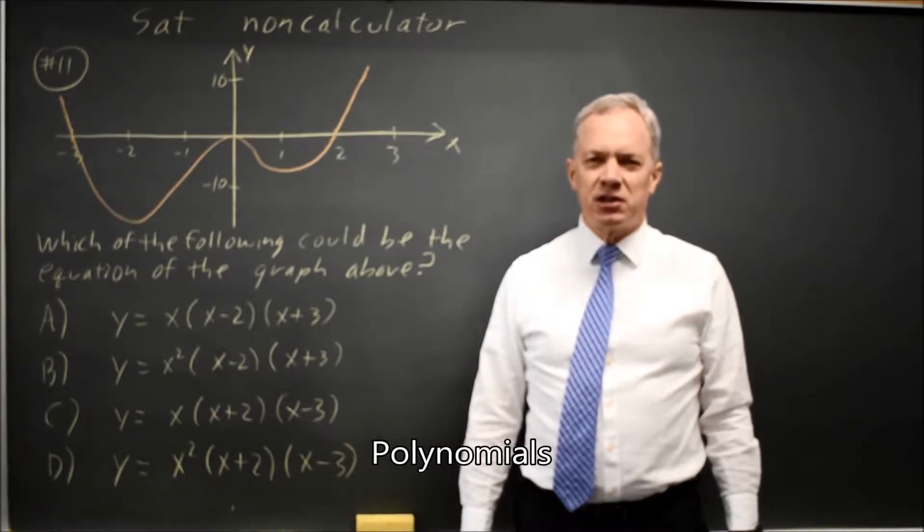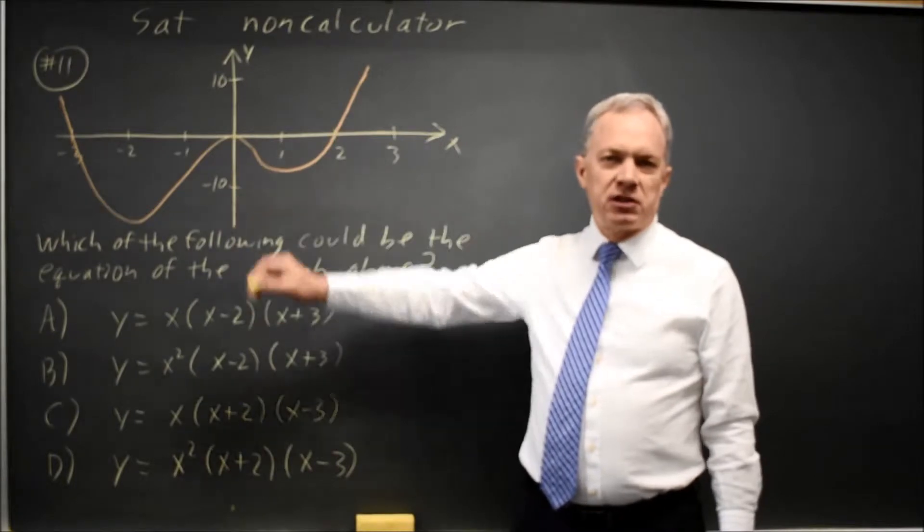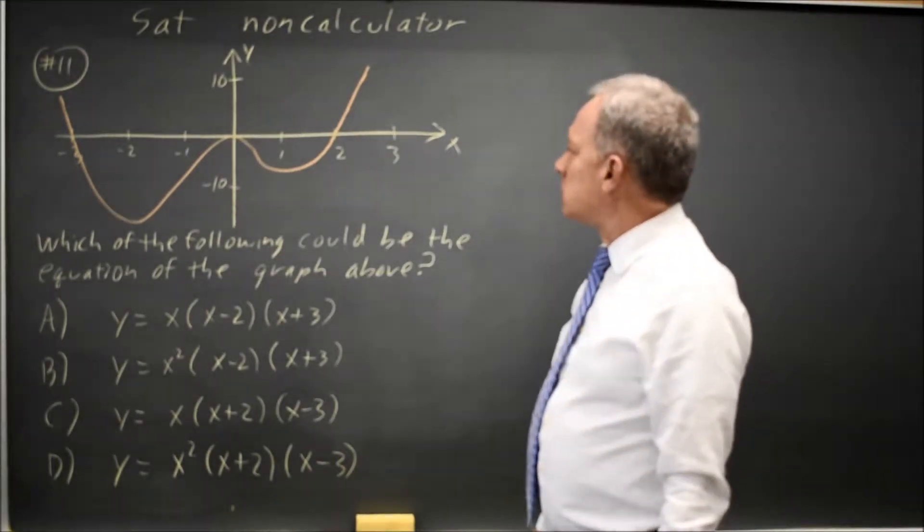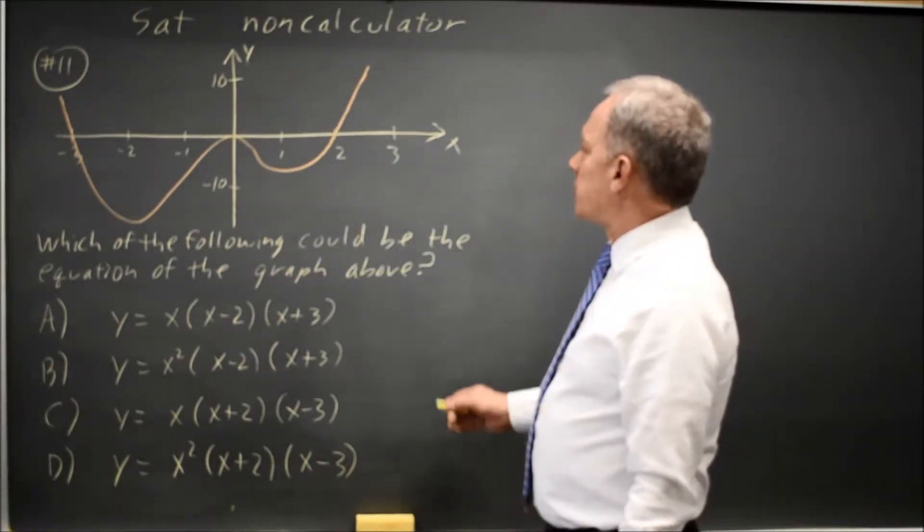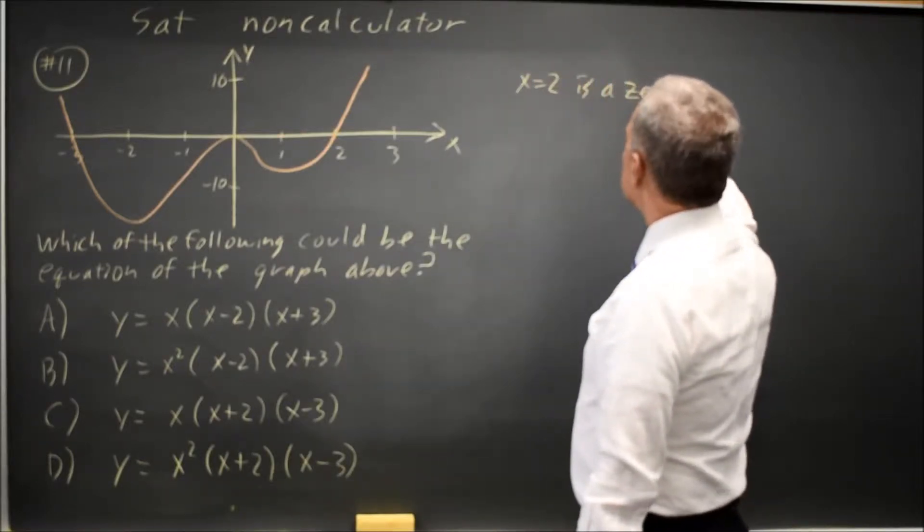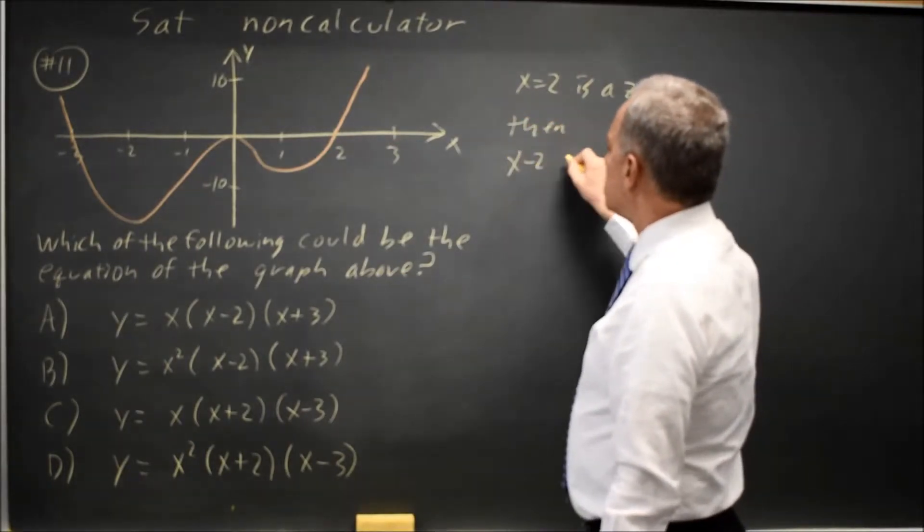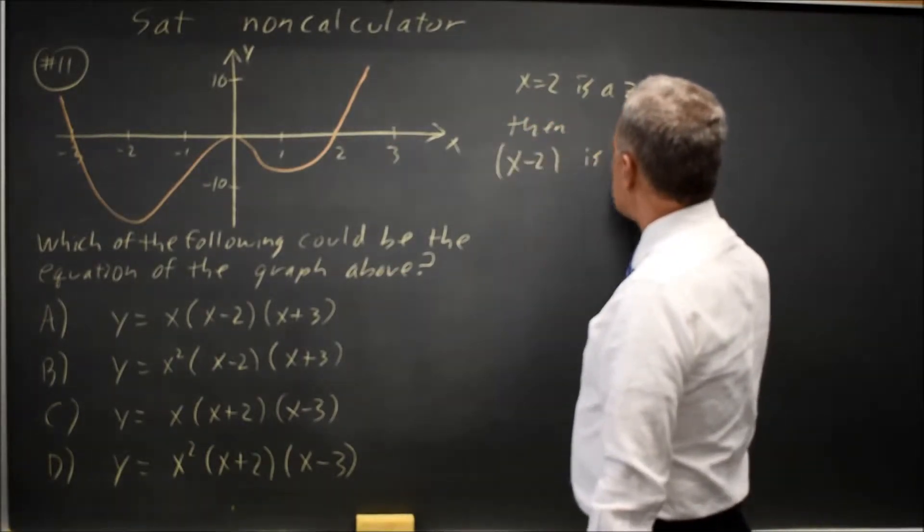This is non-calculator question number 11. The College Board is asking which of the following could be the equation of this graph, and we should know that if x equals 2 is a zero, then x minus 2 is a factor.